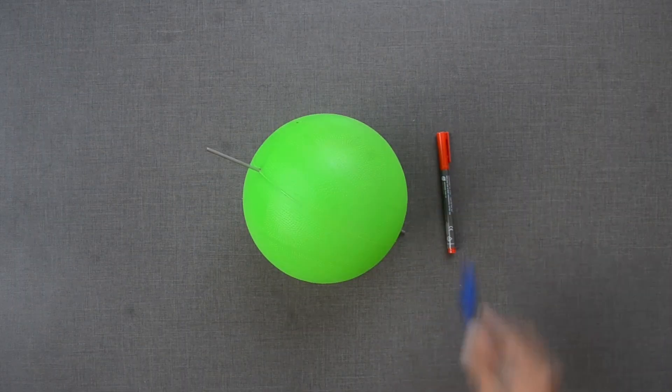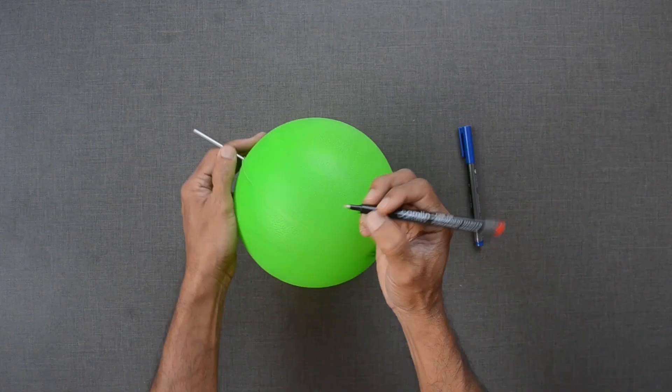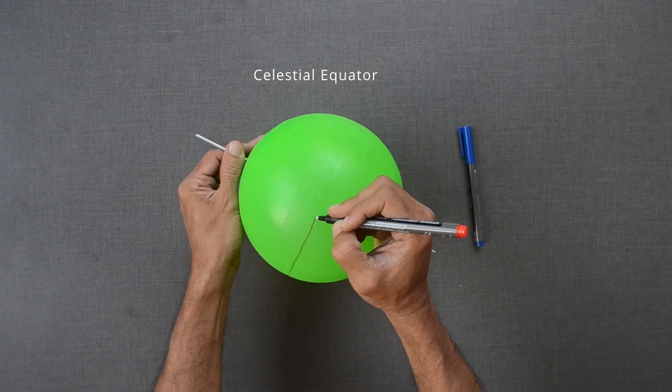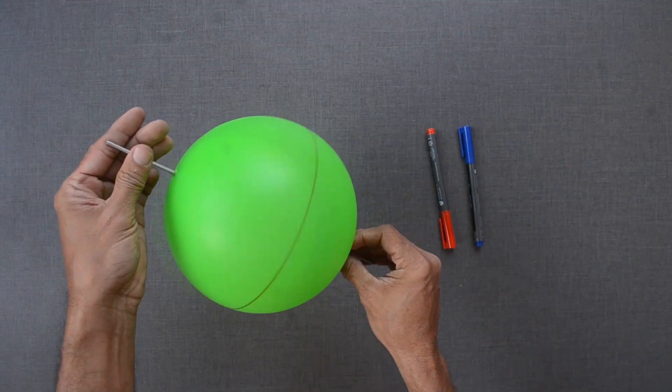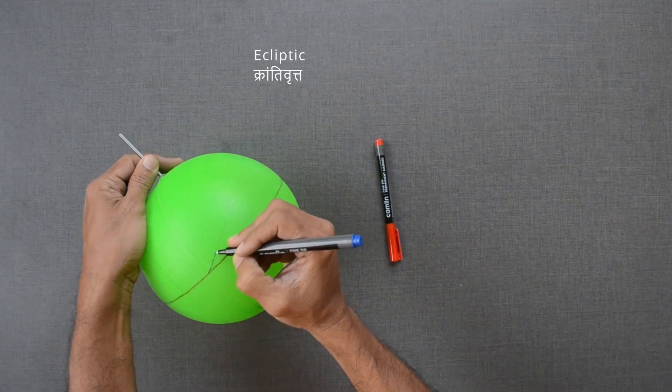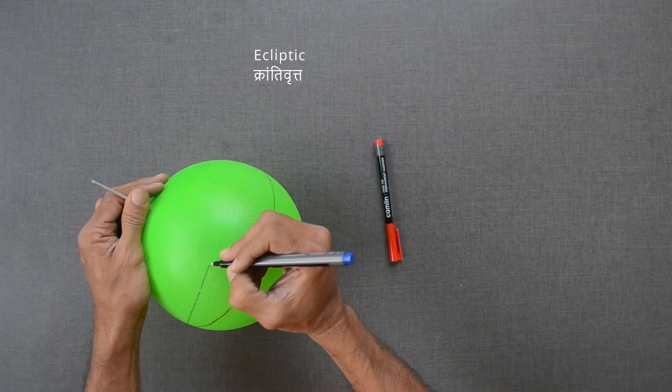Let us draw a red line to represent the celestial equator, a natural extension of our own equator on earth. This line represents the ecliptic, the path sun traverses throughout the year.